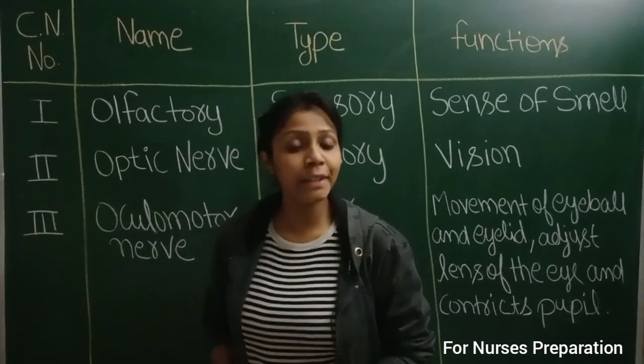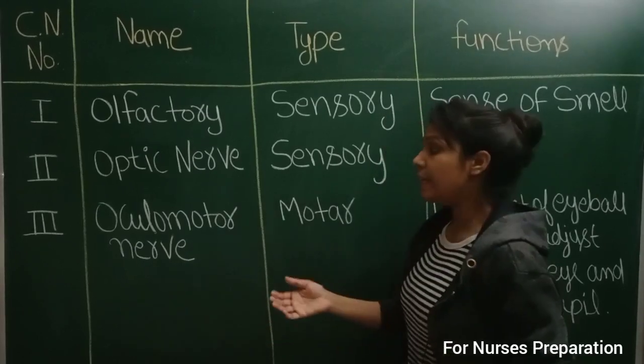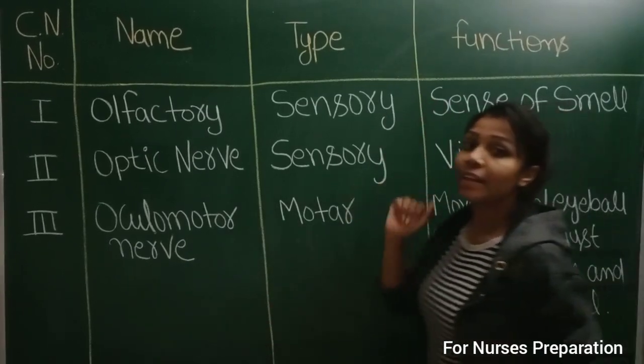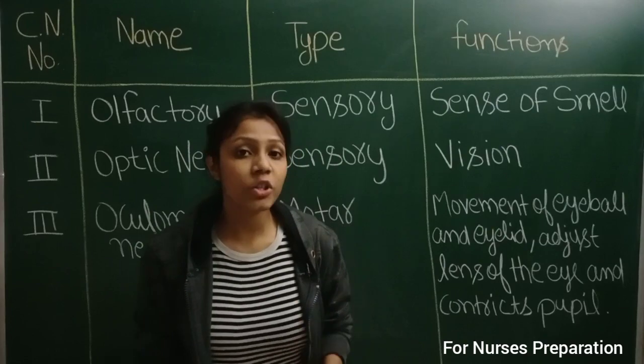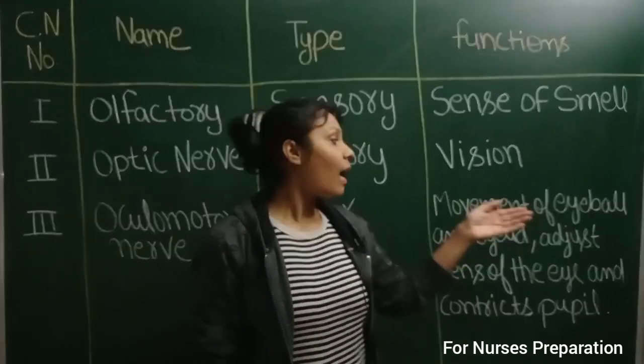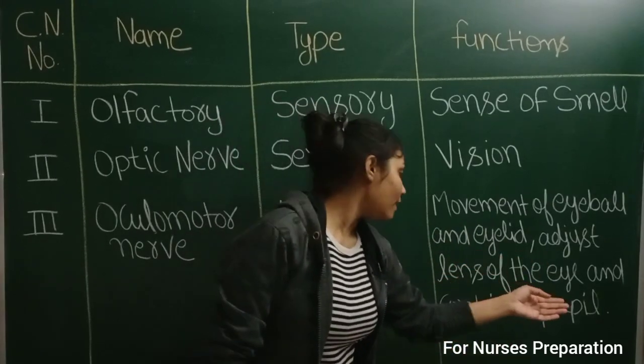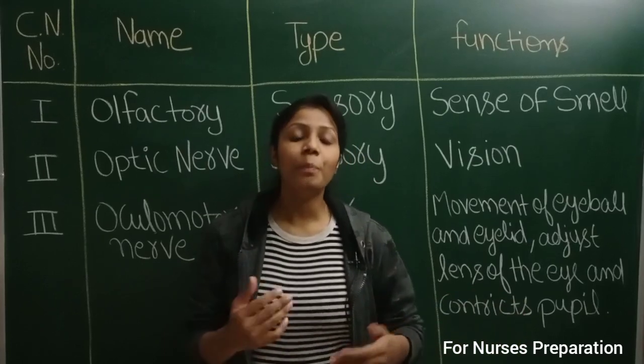Third cranial nerve name is oculomotor nerve. It is motor in their type and their functions are movement of eyeball and eyelid, adjust lens of the eye and constrict the pupil.